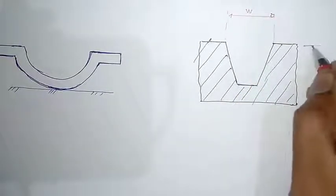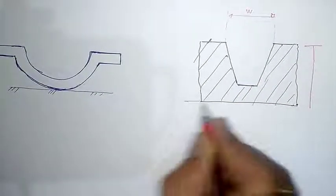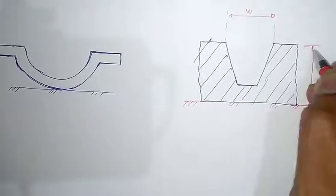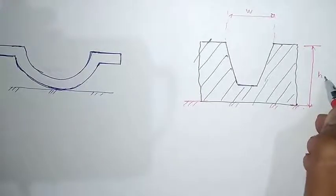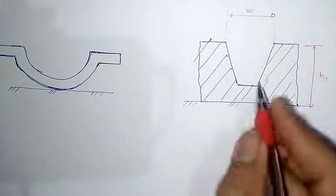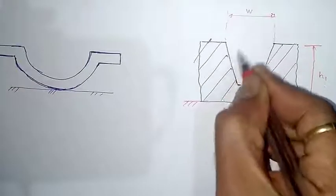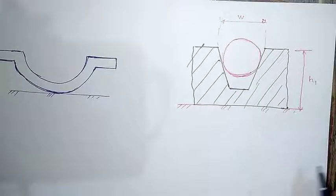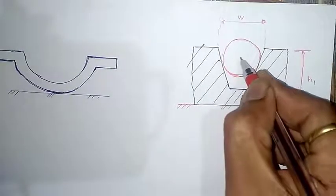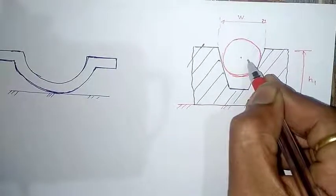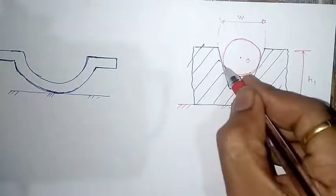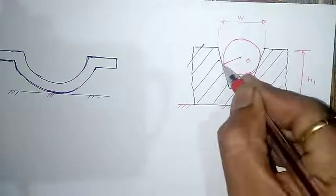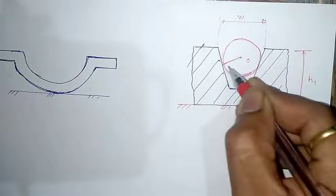First of all, we should know the height of the component. This component is placed on the surface table. The height of this component is H1. Now put a sphere inside the slot. Consider this is the sphere kept inside the slot, which has a center O. Now make geometrical constructions — draw a line joining the point touching the sphere and the center of the sphere.